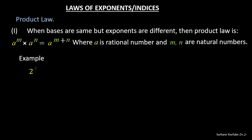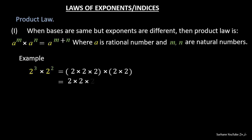Let 2 to the power of 3 be multiplied with 2 to the power of 2. We know that 2 to the power of 3 means 2 is multiplied by itself 3 times, and 2 to the power of 2 means 2 is multiplied by itself 2 times. Removing the brackets and writing all together, 2 is multiplied 5 times, meaning 2 to the power of 5.